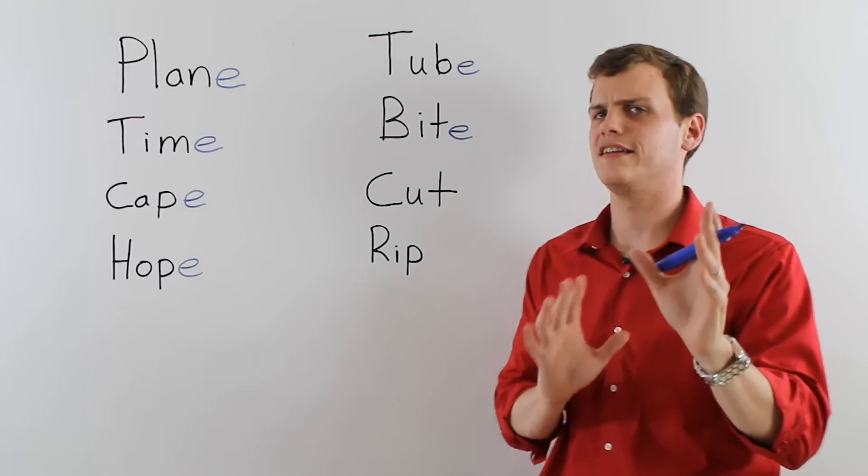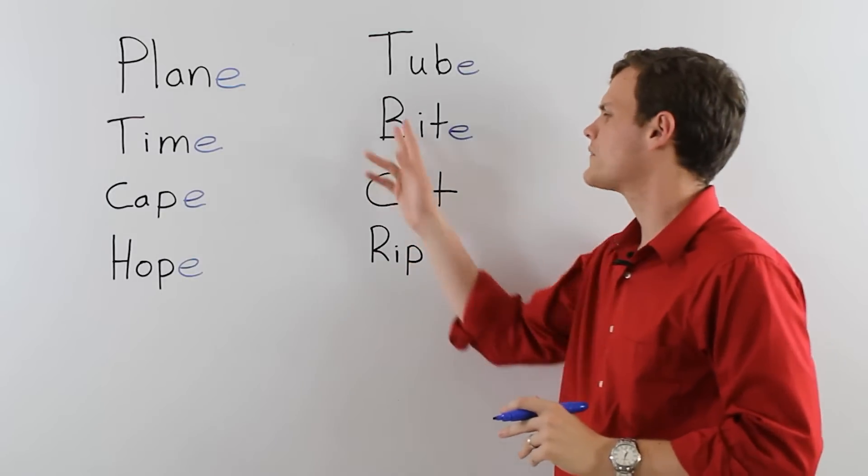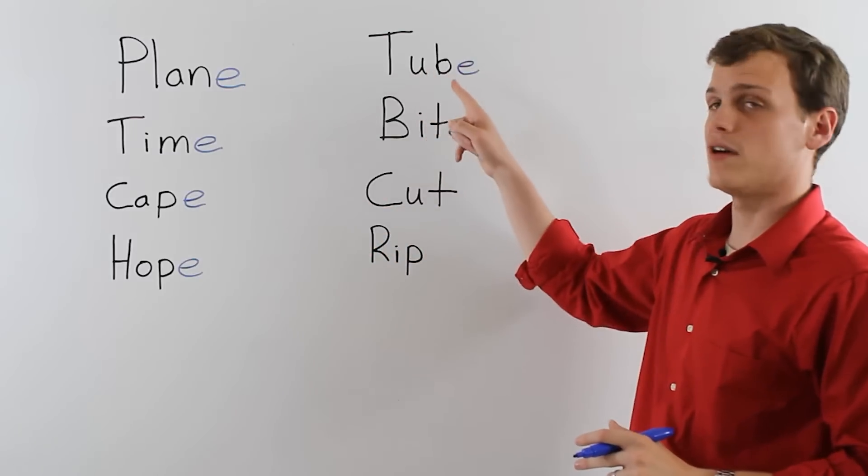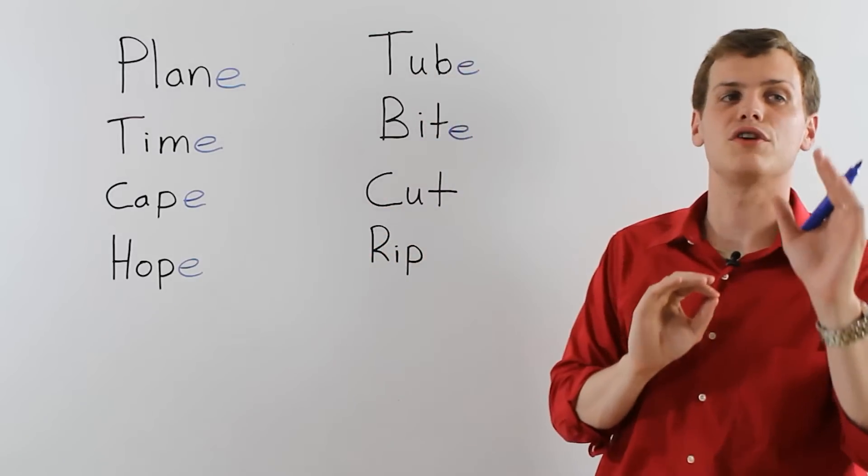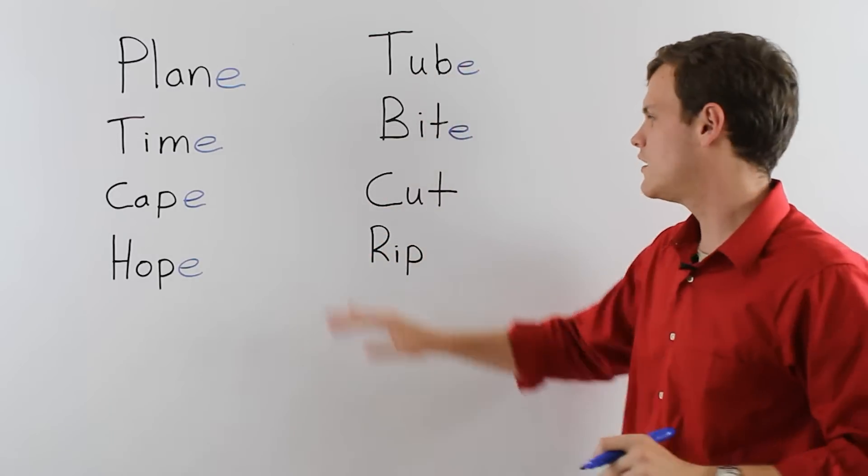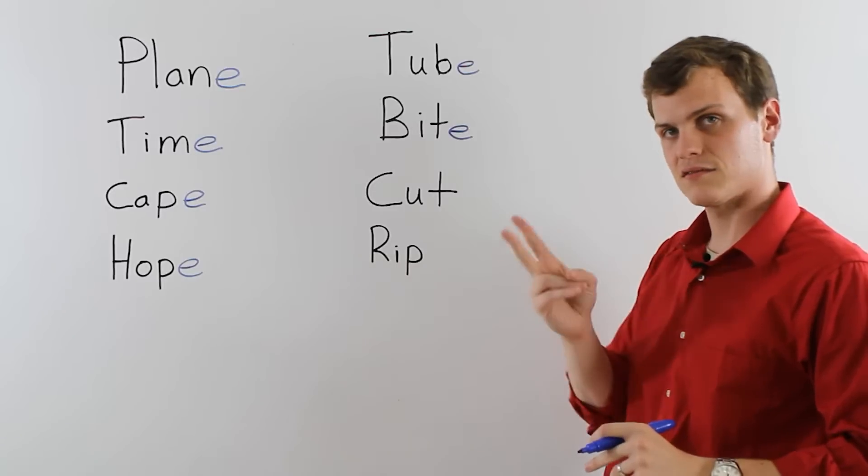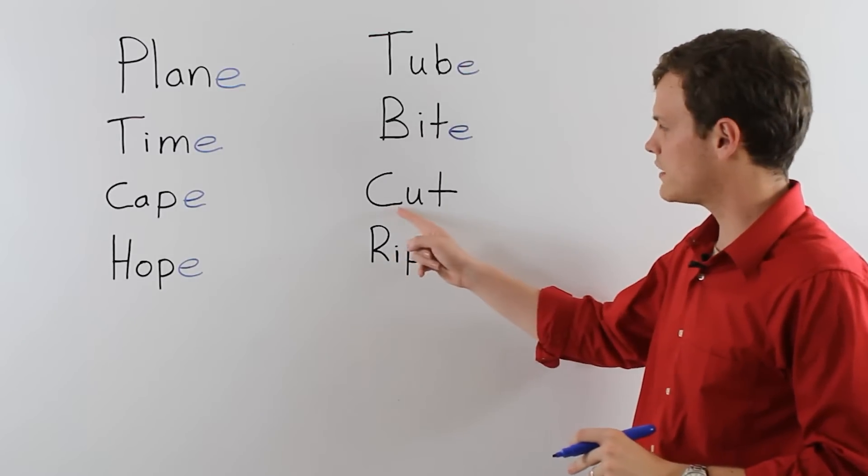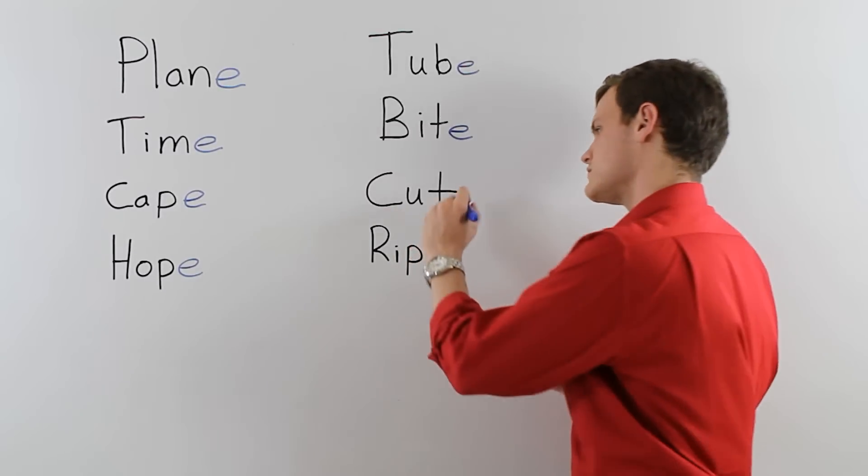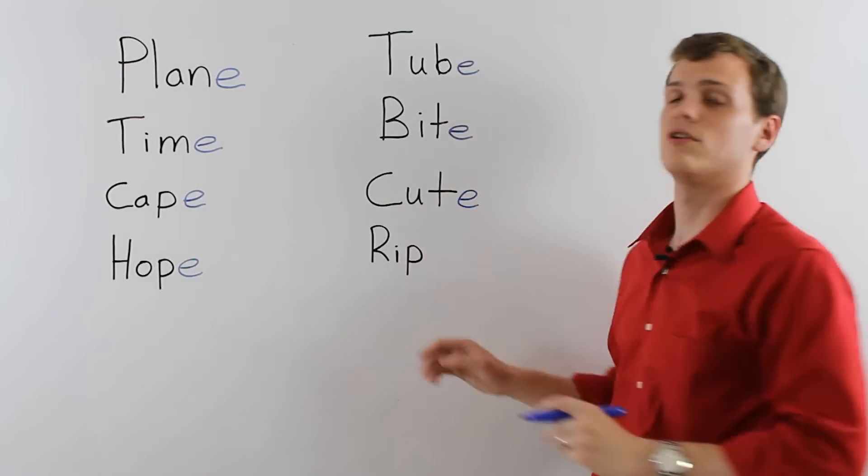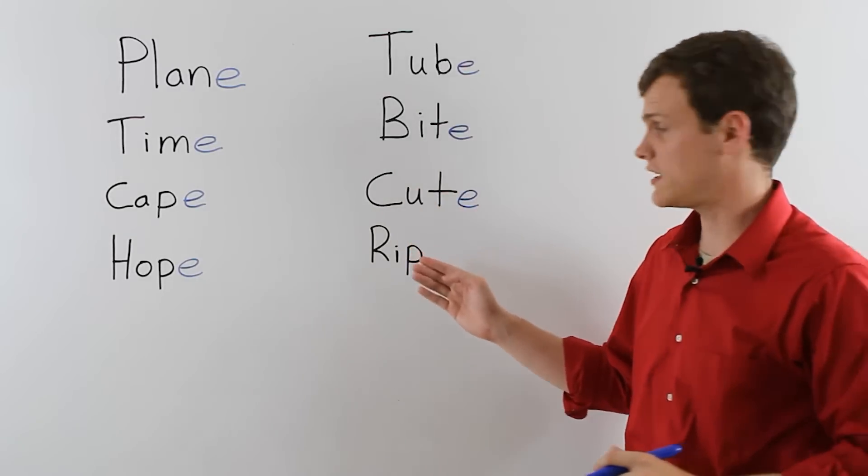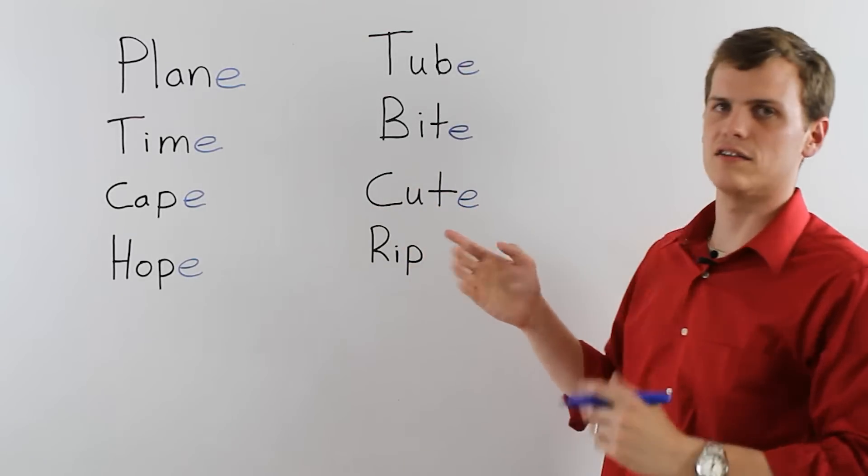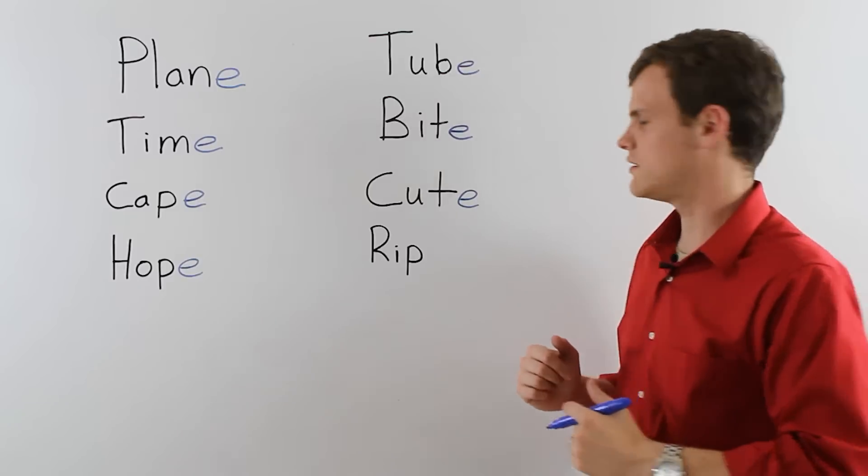Now you're probably getting a good idea of it. So I've got two more for you. Again, here. Remember, the short vowel U. Well, here is cut. We go cut. Now, cute. We have cute. Ah, look at the cute puppy.